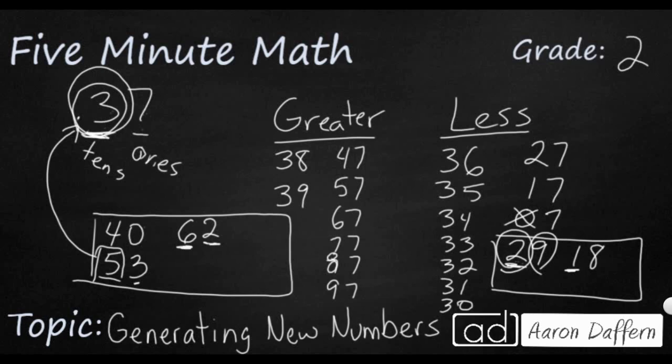My 1 ten, which is my largest place value, that's what counts. It's smaller than your 3 tens. So it doesn't matter if this 8 is larger than the 7. That's how you make numbers that are larger and smaller.